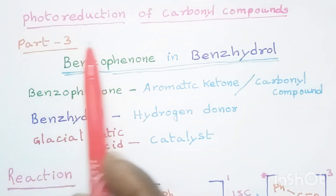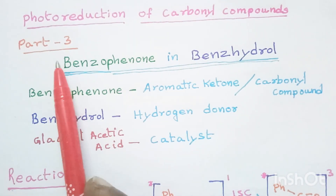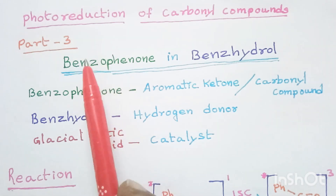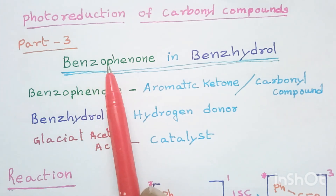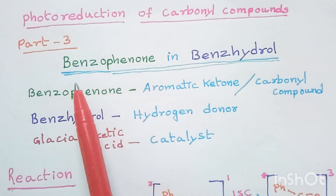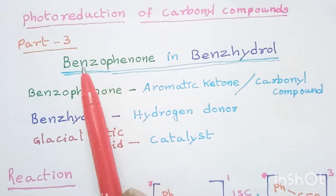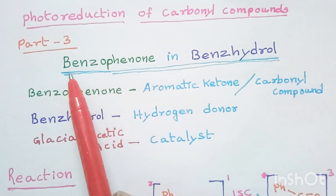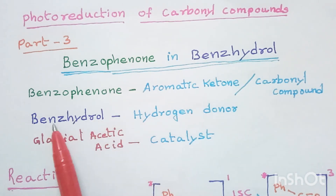Today we shall learn about photoreduction of carbonyl compounds, Part 3. In the previous lectures we have learned about photoreduction of carbonyl compounds — introduction, photoreduction in isopropyl alcohol, and in toluene. Today we shall learn about photoreduction of carbonyl compounds in benzhydrol. Here benzophenone is the carbonyl compound or aromatic ketone, and benzhydrol is the hydrogen donor.